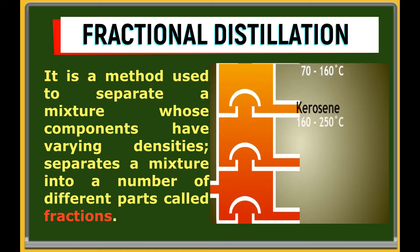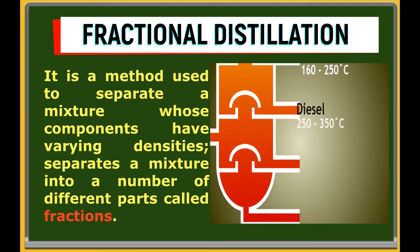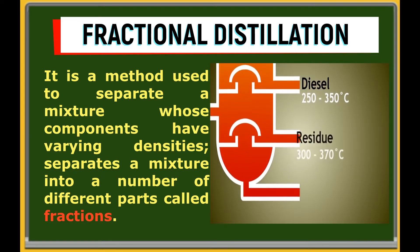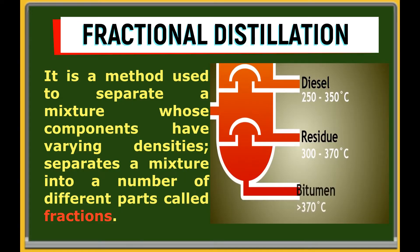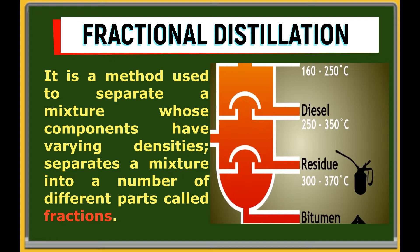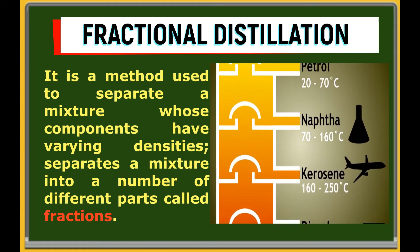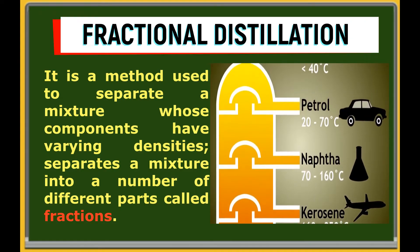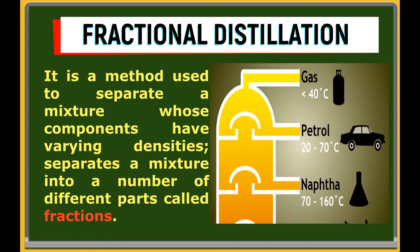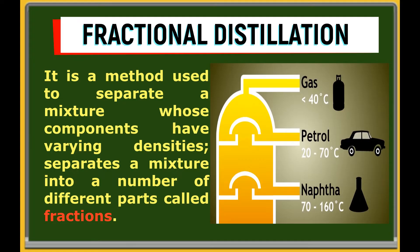Fractional distillation separates a mixture into a number of different parts called fractions. A tall fractionating column is fitted above the mixture with several condensers coming off at different heights. The column is hot at the bottom and cool at the top. Substances with high boiling points condense at the bottom and substances with lower boiling points condense on the way to the top.